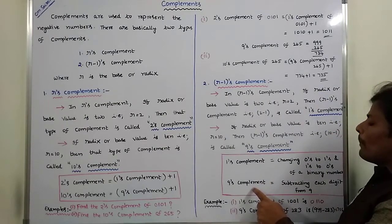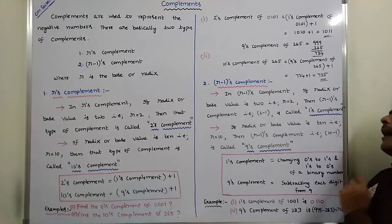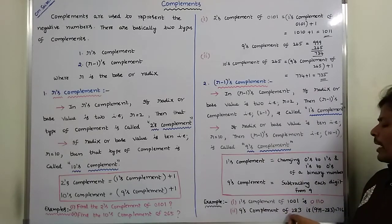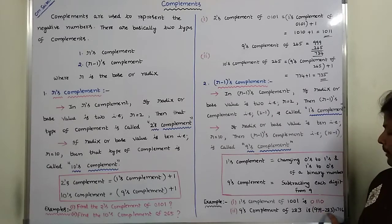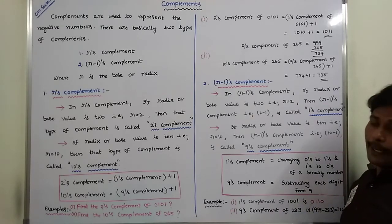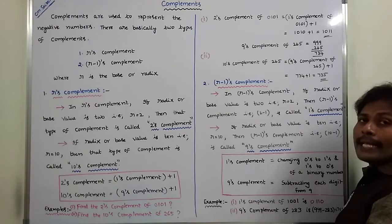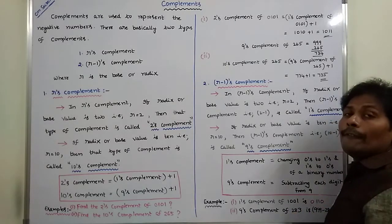Next, 9's Complement is found by subtracting each and every digit from 9. For example, 9's Complement of 283: there are 3 digits, so we compute 999 minus 283. 9 minus 3 is 6, 9 minus 8 is 1, 9 minus 2 is 7. So 716 is the 9's Complement of 283. The 10's Complement of 283 equals 9's Complement of 283 plus 1: 716 plus 1 equals 717. So 717 is the 10's Complement of 283.